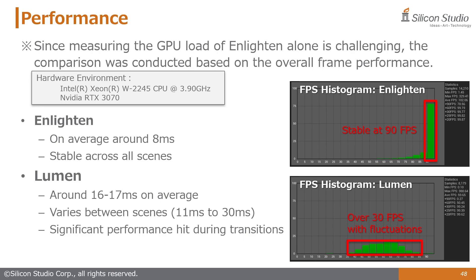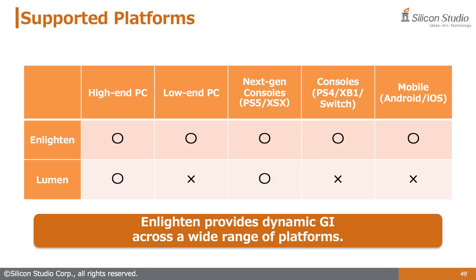Here are some performance metrics captured during these comparisons. Enlighten's GPU load is difficult to measure individually due to the nature of its integration, so we observe overall frame time. Across all scenes, Enlighten maintains a stable load of approximately 8ms without significant performance issues. Lumen showed an average load of around 16–17ms with considerable fluctuations, with actual values ranging between 11–30ms, and a tendency for performance to drop during scene transitions. Given that Lumen is currently supported only on high-end platforms, if the goal is to achieve dynamic lighting across a broad range of environments including mobile, Enlighten appears to be the most effective option.